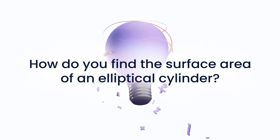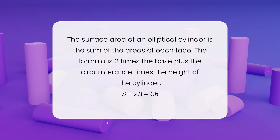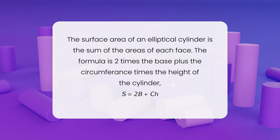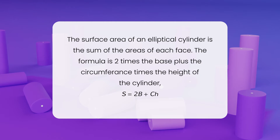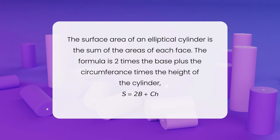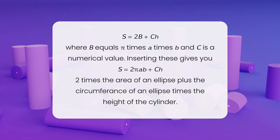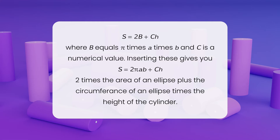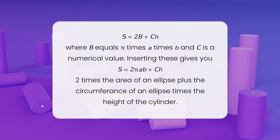How do you find the surface area of an elliptical cylinder? The surface area of an elliptical cylinder is the sum of the areas of each face. The formula is 2 times the base plus the circumference times the height of the cylinder, where B equals pi times A times B, and C is a numerical value. Inserting these gives you 2 times the area of an ellipse plus the circumference of an ellipse times the height of the cylinder.